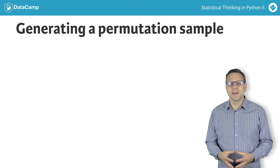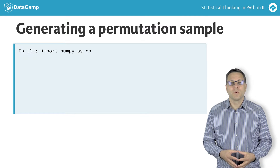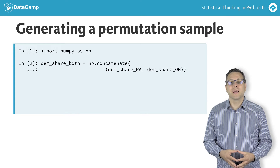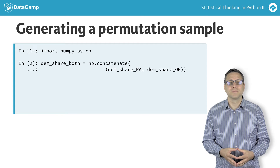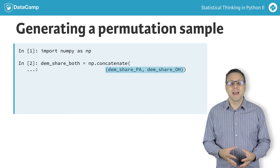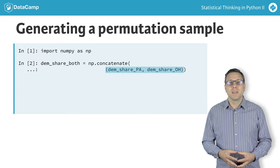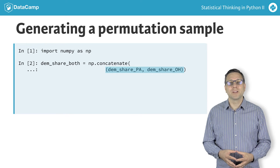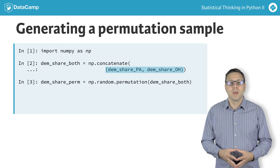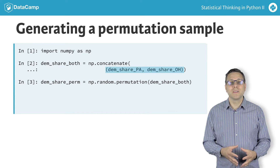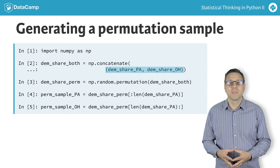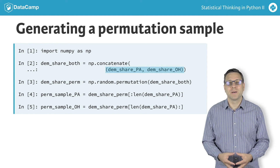Let's look at how we can implement this in Python. First, we need to make a single array with all of the counties in it. We do this using the np.concatenate function, which takes a tuple of the arrays you wish to concatenate as an argument. Next, we use np.random.permutation to conveniently scramble the entries of the array. We then assign the first 67 entries to be labeled Pennsylvania, and the last 88 to be labeled Ohio. These samples are called permutation samples.